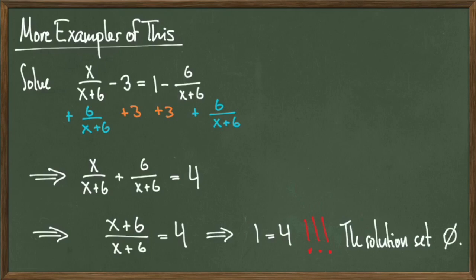But any non-zero number divided by itself is equal to 1, so we end up with the equation 1 equals 4. Again, this is a false statement, so we know the solution set to this rational equation is also the empty set.